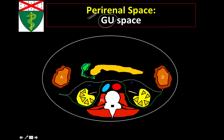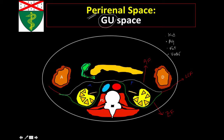Both the anterior and posterior perirenal fascia join out laterally to form the lateral conal fascia. The posterior perirenal fascia is known as Zuckerkandl's fascia. The perirenal space contains the kidneys, the adrenal glands, a whole bunch of perinephric fat, and portions of the proximal ureters. Within the perirenal space, there are also tiny lymphatics that extend to Gerota's fascia and Zuckerkandl's fascia, which serve as potential conduits for decompression of any pathological process within this space through the different fascial planes.